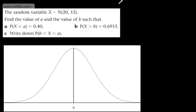In this video, we're going to look at finding values given probabilities. We're told the random variable X follows a normal distribution with mean 20 and variance 12. We need to find the value of a and the value of b such that the probability of X being less than a is 0.4, the probability of X being greater than b is 0.6915, and then we need to write down the probability that X is between b and a.